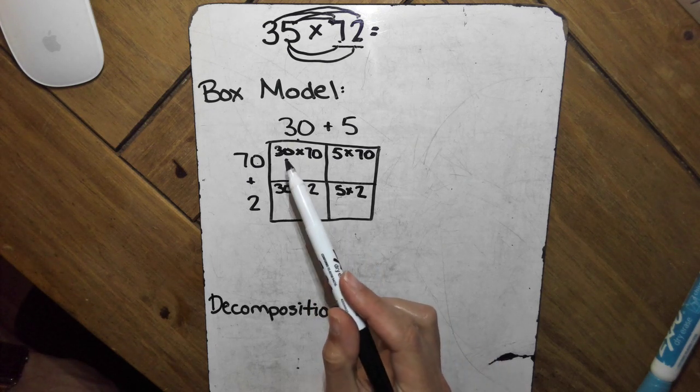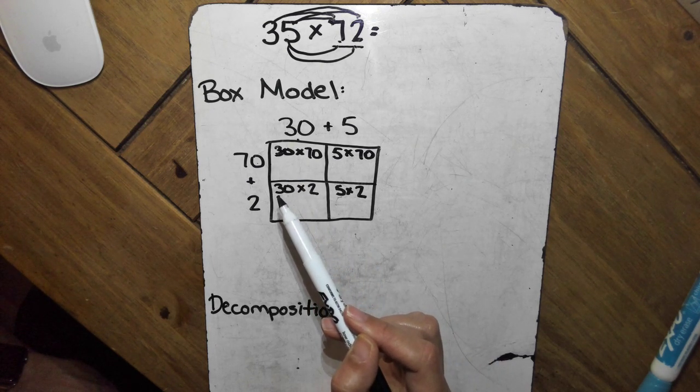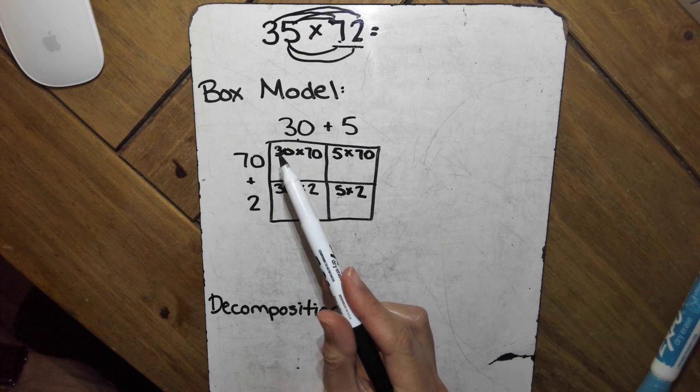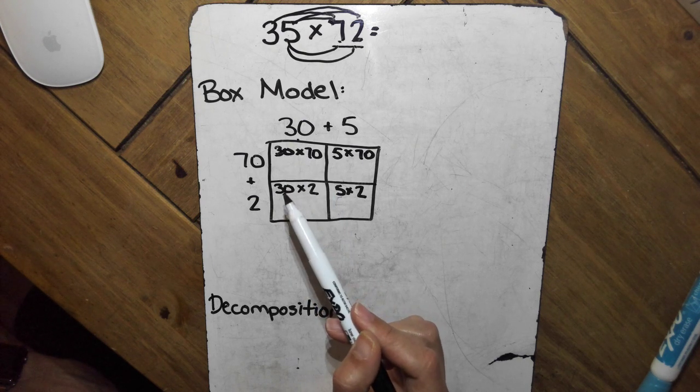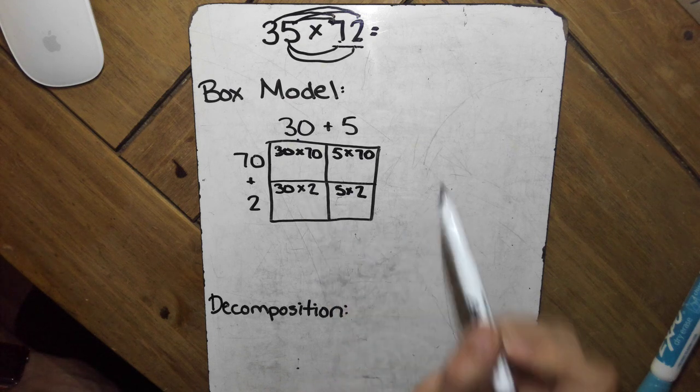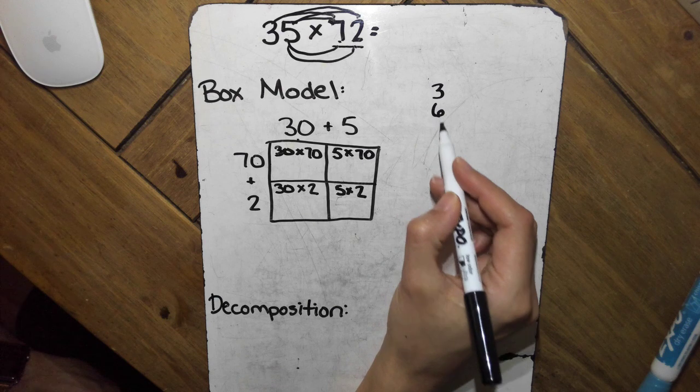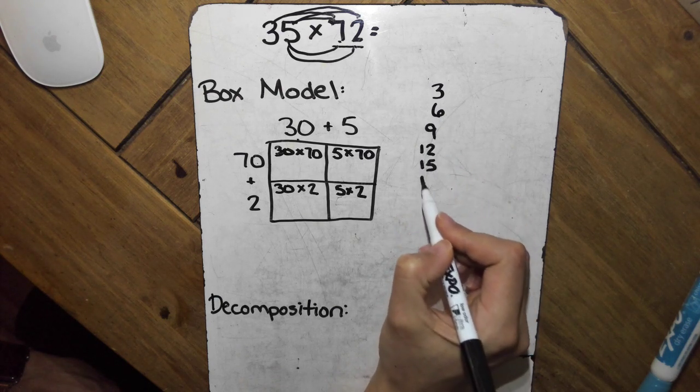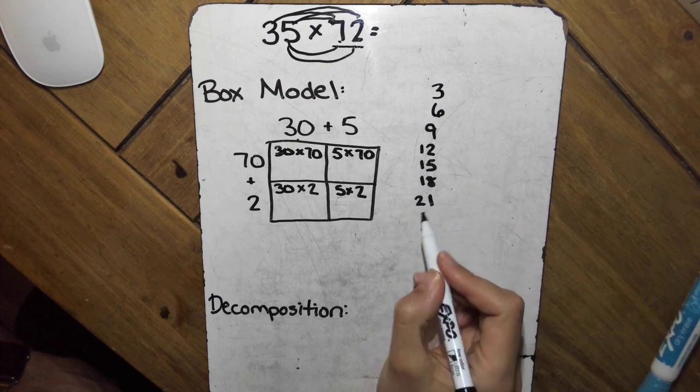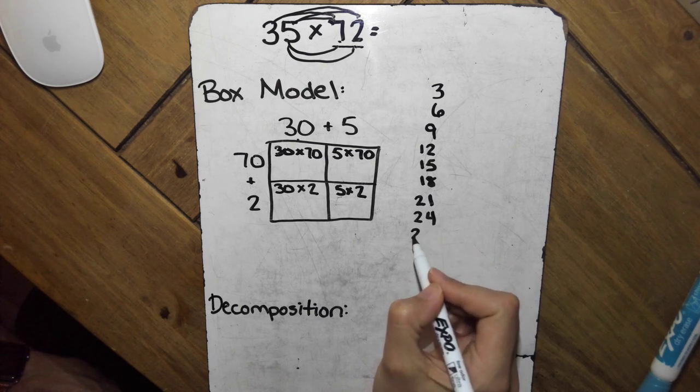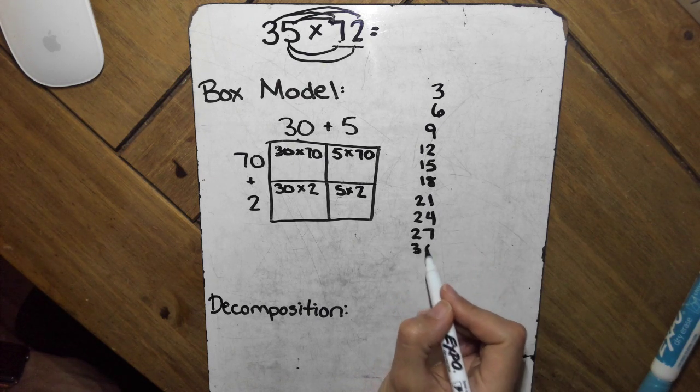All right, so both of these, I see, have a 3, so I'm going to just skip count by threes to help me to do 30 times 70, and 30 times 2. So, skip count: 3, 6, 9, 12, 15, 18, 21, 24, 27, 30, 33. Okay.